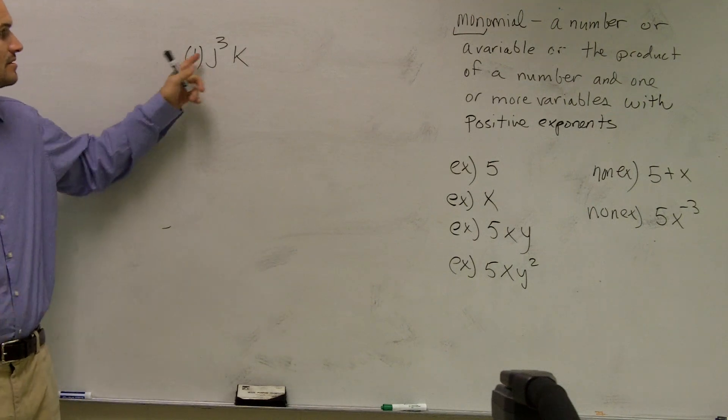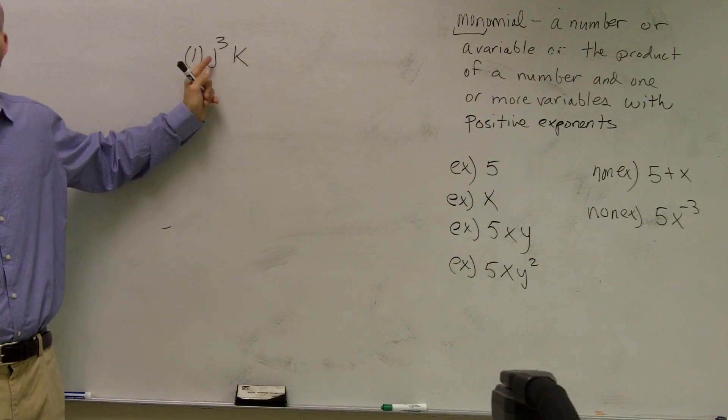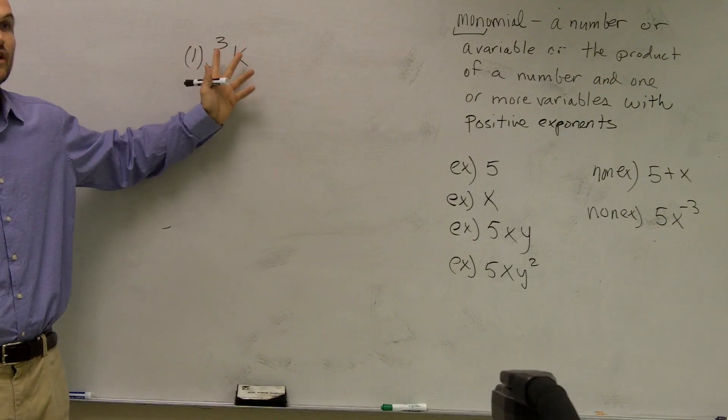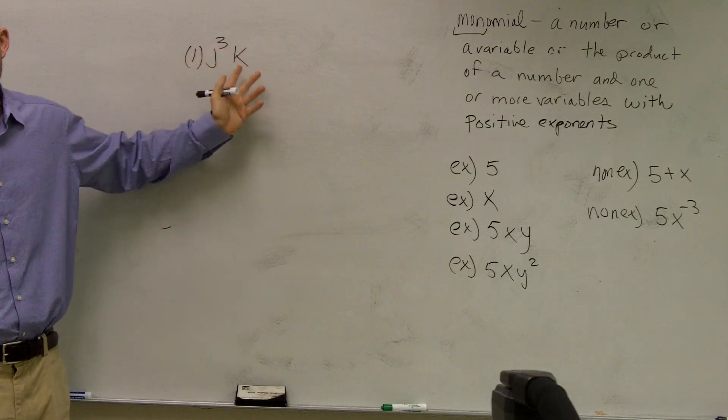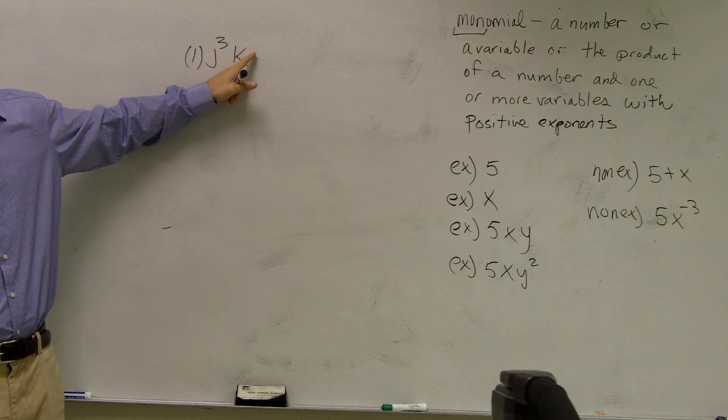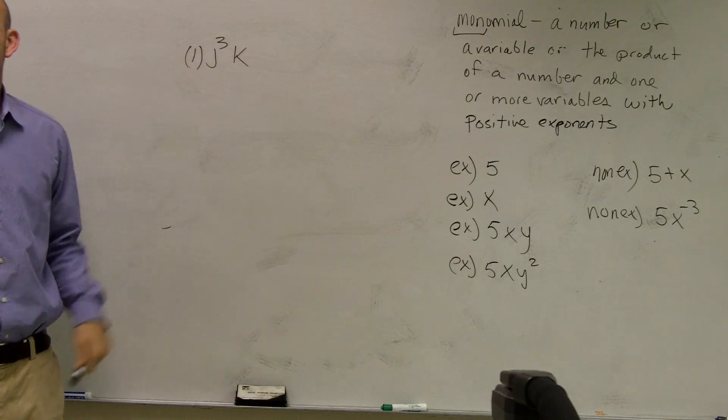So we have one times variables. Do we have more than one variable? Yeah, we actually have two, right? And are both of these variables raised to positive exponents? Well, that's raised to a positive third. And we'll talk about this. This is going to be raised to a positive one. But yes, they're both raised to exponents.